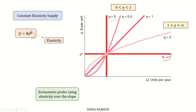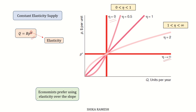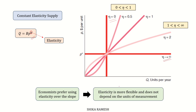Economists prefer using elasticity over slope as a measure of how responsive demand is to price changes because elasticity is more flexible and does not depend on the units of measurement, while the slope does.